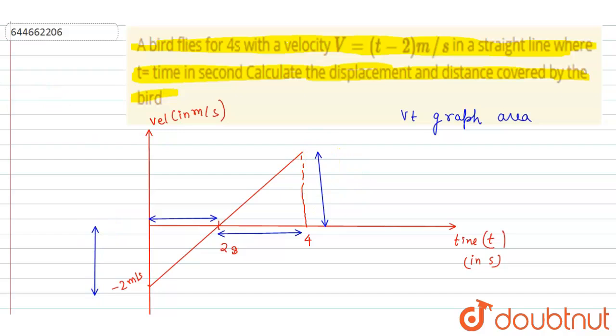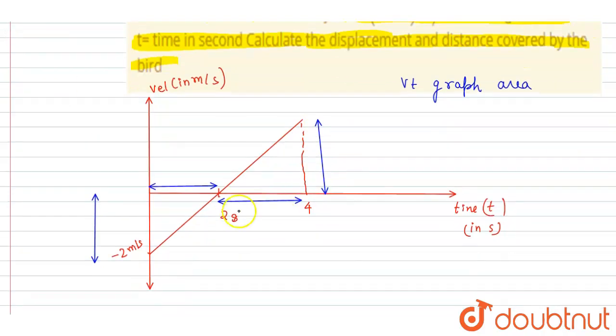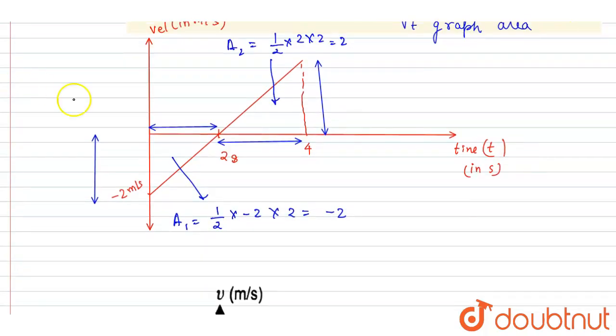So if you calculate the area A1 and A2, this is half into base into height, so half into minus 2 into 2, it will be minus 2. And area of this, this is A1, and area of this is A2, it will be half into again base into height, it is again 2. So if I write down the total area, it will be A1 plus A2, that is 0.